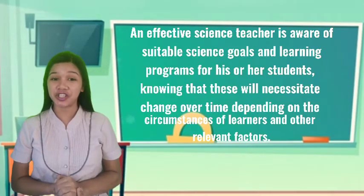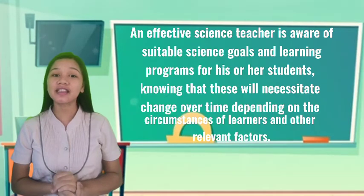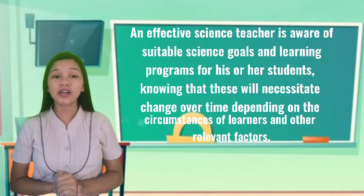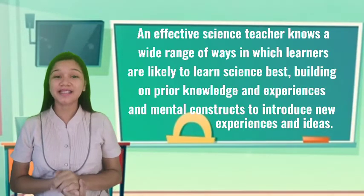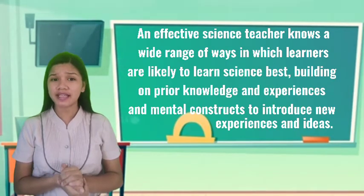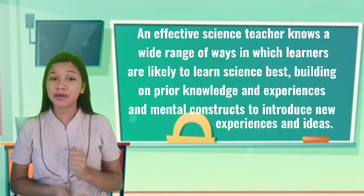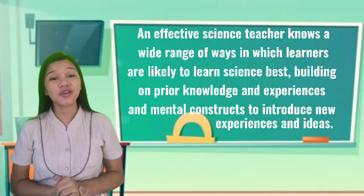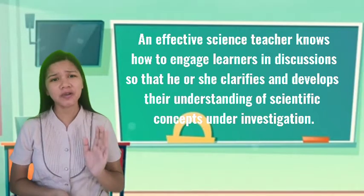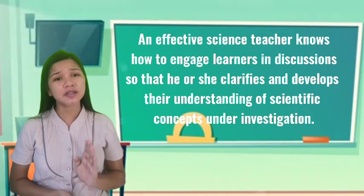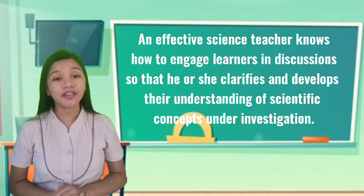Second, an effective science teacher is aware of suitable science goals and learning programs for his or her students, knowing that this will necessitate change over time depending on the circumstances of learners and other relevant factors. Third, an effective science teacher knows a wide range of ways in which learners are likely to learn science best, building on prior knowledge and experience and mental constructs to introduce new experiences and ideas. Fourth, the effective science teacher knows how to engage learners in discussions so that he or she clarifies and develops their understanding of concepts under investigation.